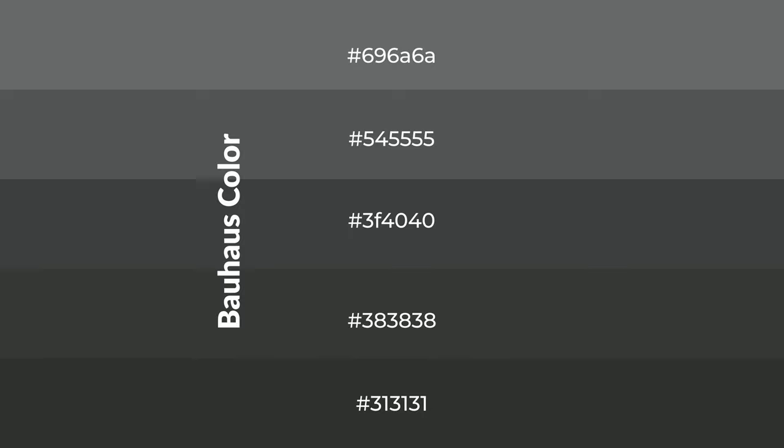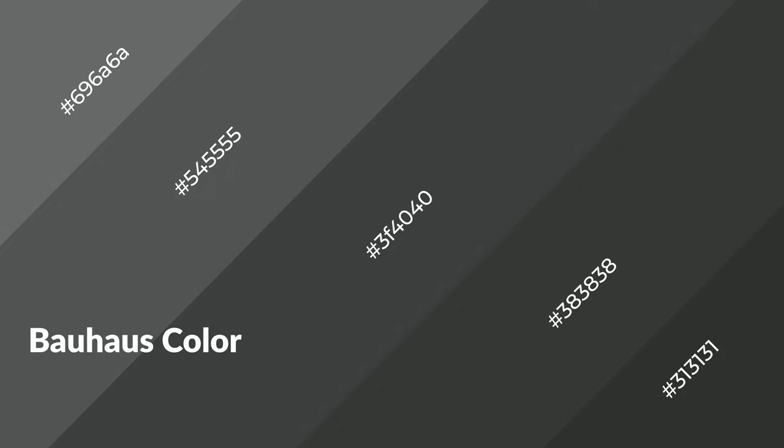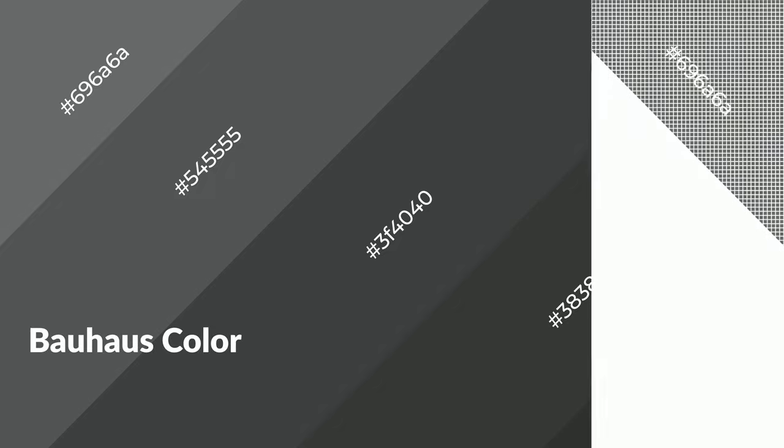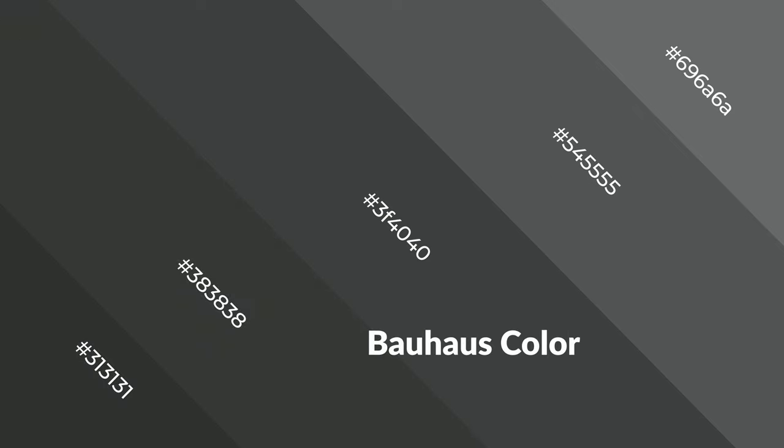To generate shades of a color, we add black to the color. Shades are used in patterns, 3D effects, and layers, creating depth and drama. Bauhaus is a cool color and it emits calming, serene, soothing, refreshing, spacious, unwinding, peaceful, and relaxed emotions.